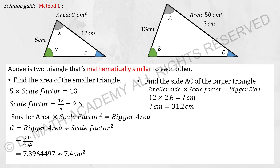For the first question, find the area of the smaller triangle. You are required to find the scale factor first by simply comparing the sides we have, which are 5 and 13. So 5 multiplied by a scale factor gives 13, and by shifting the 5 to the other side, the scale factor is 2.6.